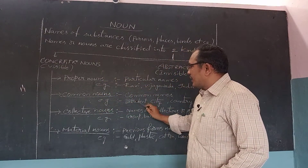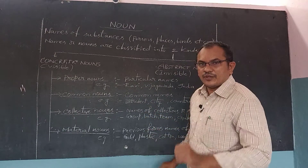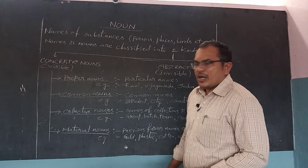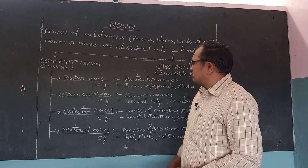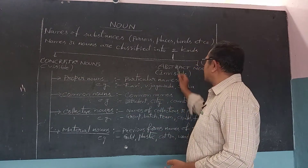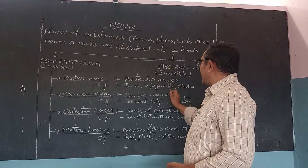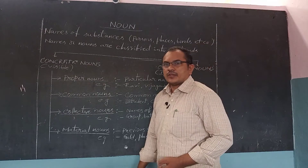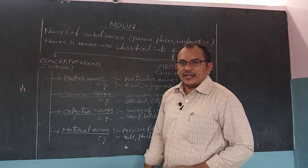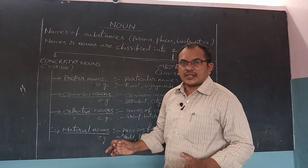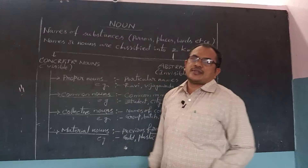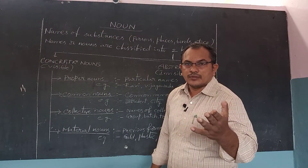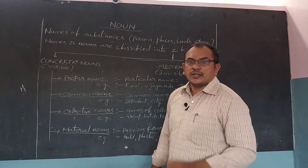First — proper nouns. Proper nouns are visible nouns because particular names of persons, particular names of places, and particular names of birds are identified as proper nouns. Particular names. For example, your name is Ananda — that is your particular name.